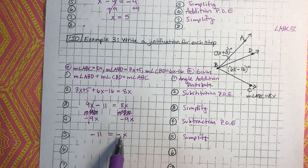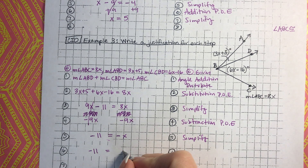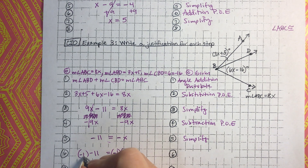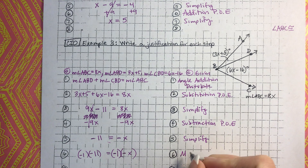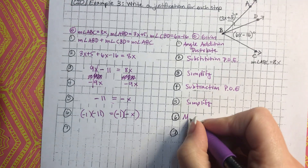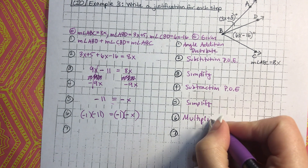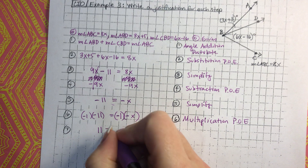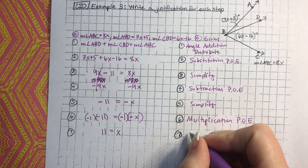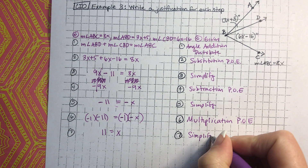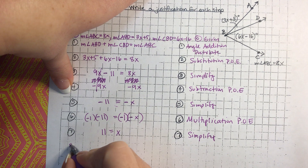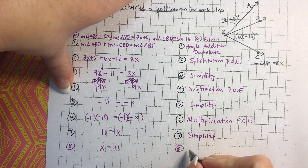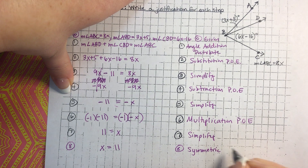I need to get rid of this negative, so I'll multiply both sides by negative 1. That is the multiplication property of equality. That leaves me with positive 11 equals x, which simplifies. Then I rewrite it as x equals 11 — the x needs to be on the left side — and I can do that because of the symmetric property of equality.